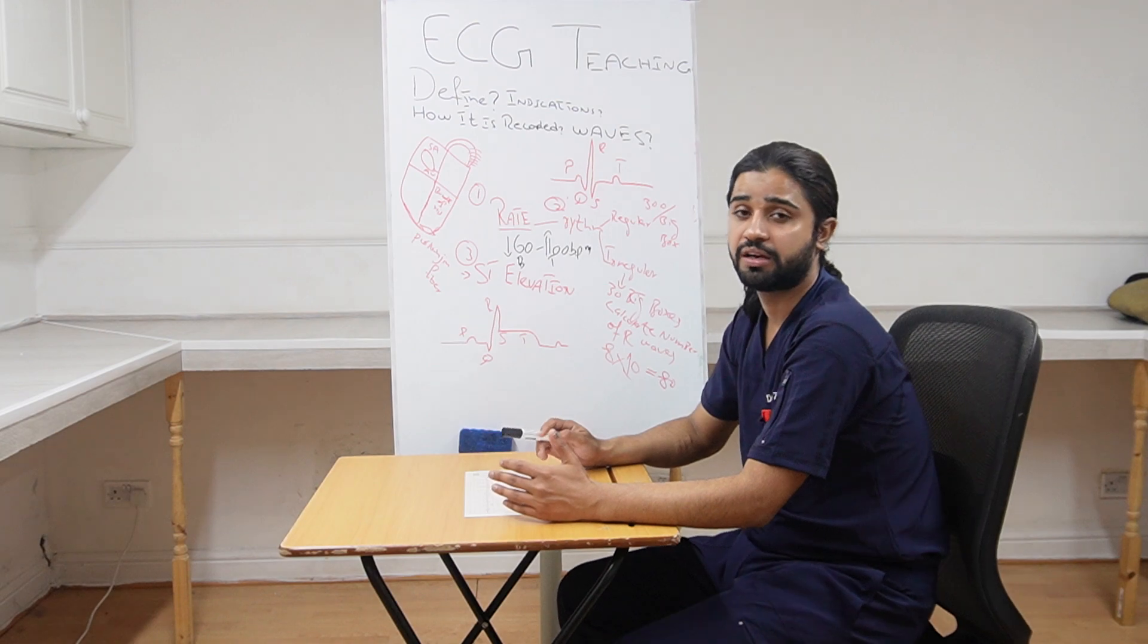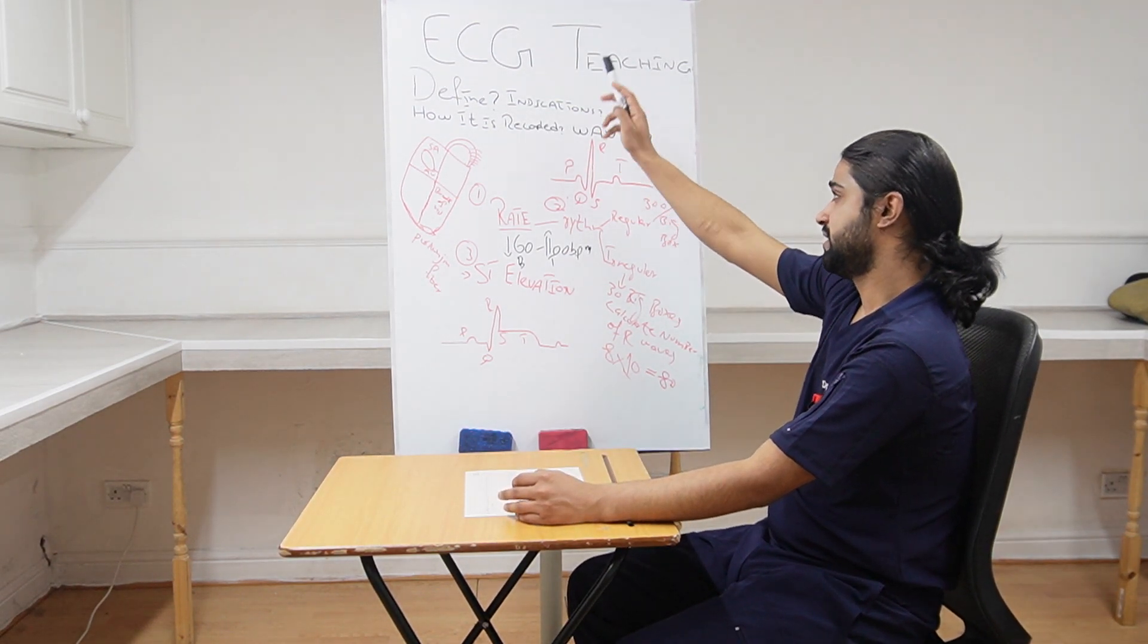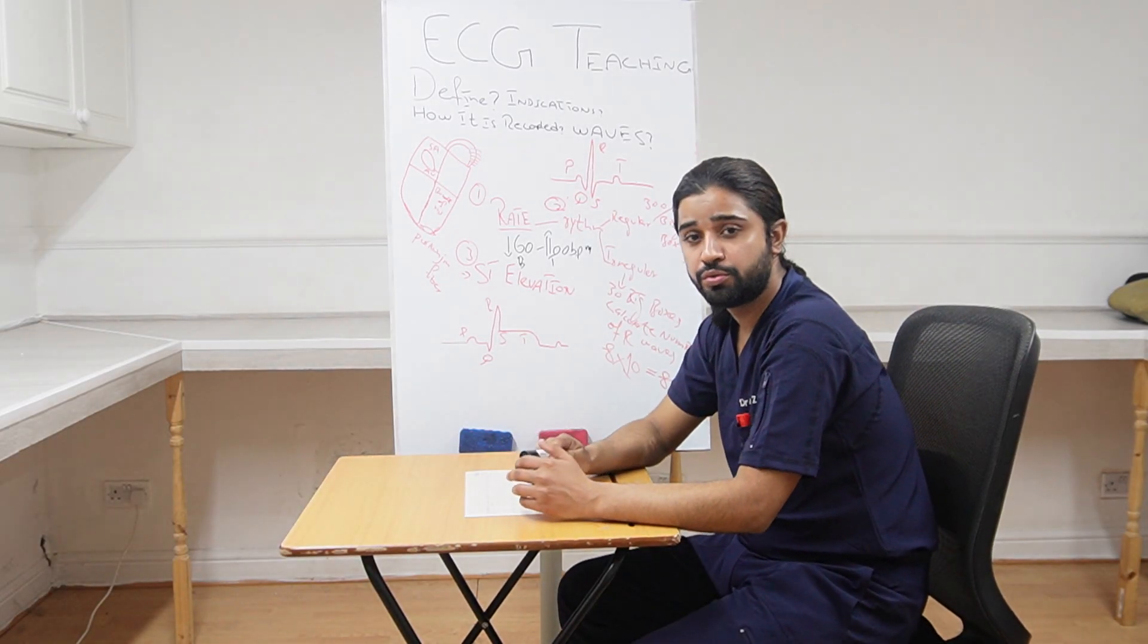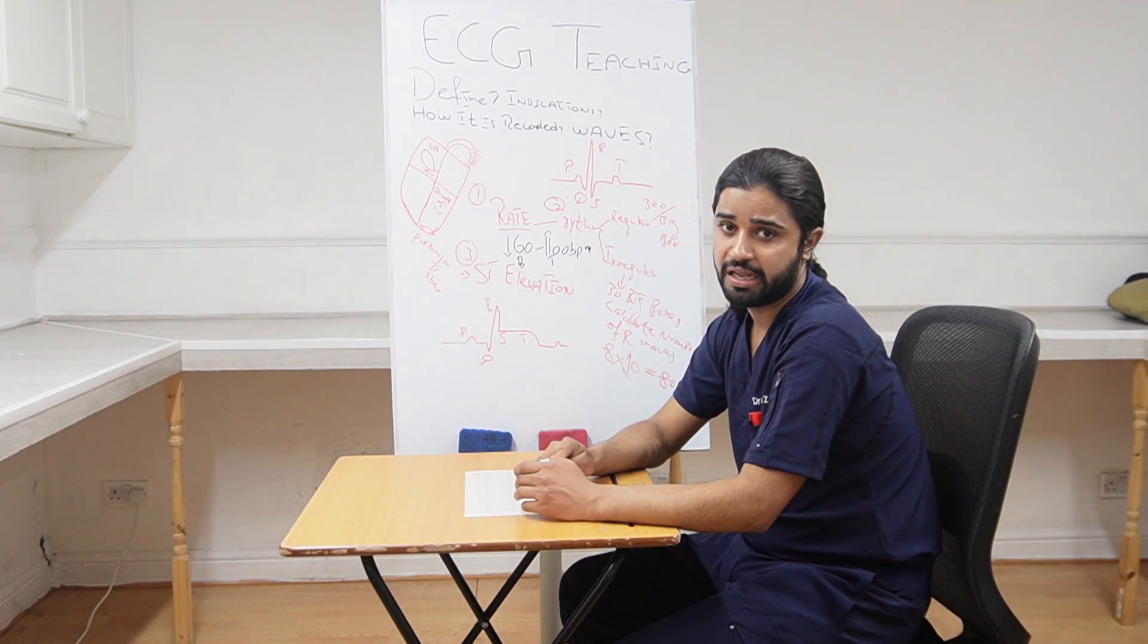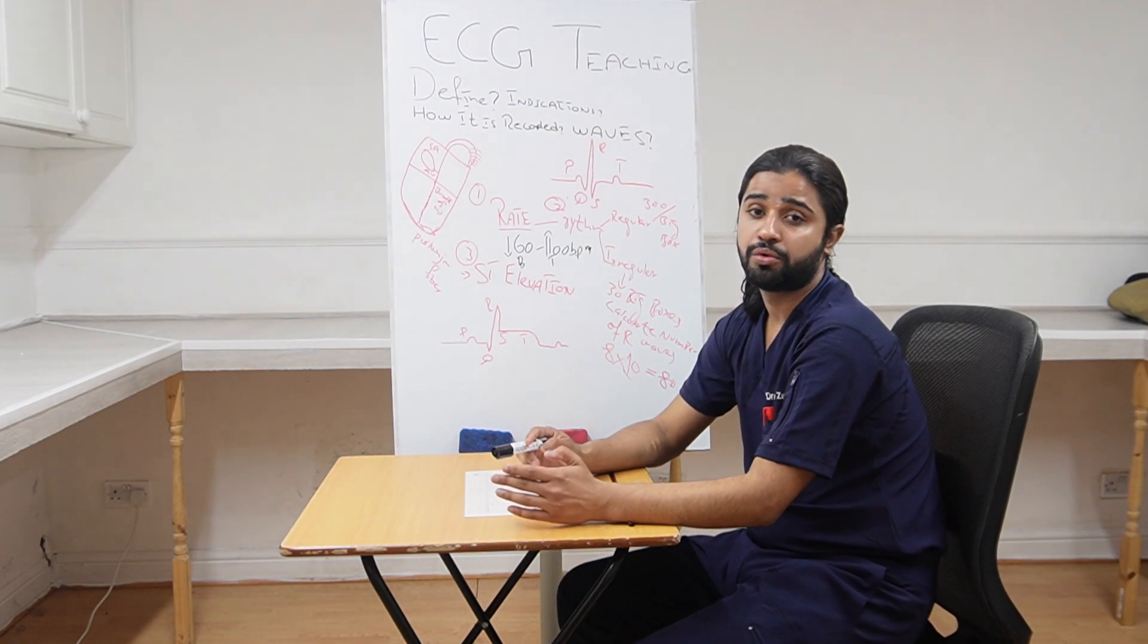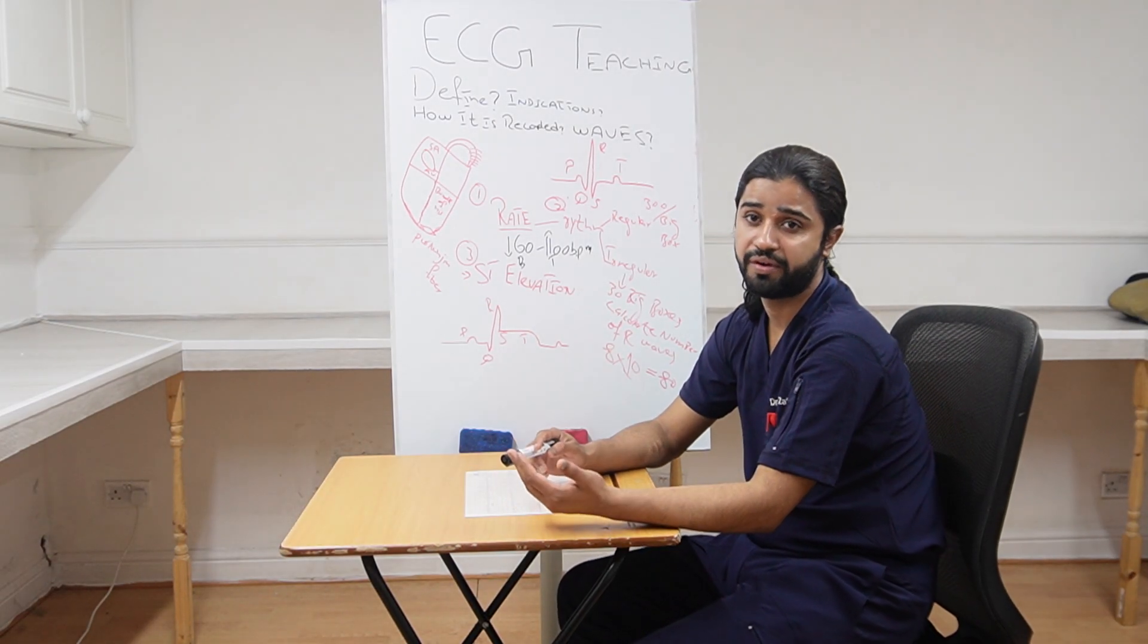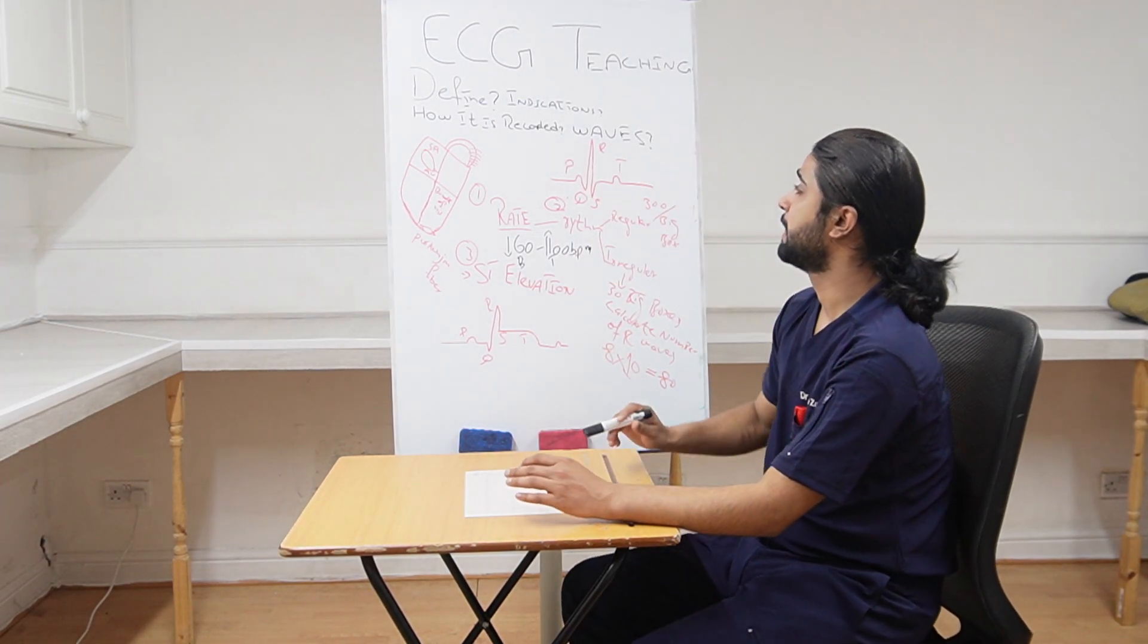So what is ECG? ECG is basically recording of electrical activity of the heart. Indications, why we do ECG? We do ECG to find any abnormality like any problem with the rhythm, any problem with the rate and if there is any acute coronary syndrome, MI. So all of these abnormalities we can find by doing ECG.